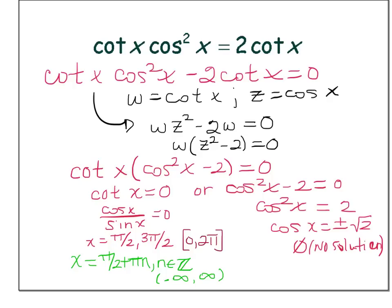If we're asked for the range zero to two pi, including zero but not including two pi, then x can be pi over two or three pi over two. Or expressed generally, pi over two plus every pi radians after that: pi over two, three pi over two, five pi over two, and we can also go backwards.